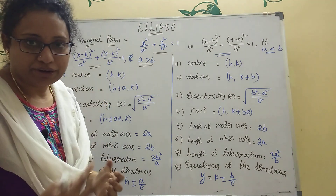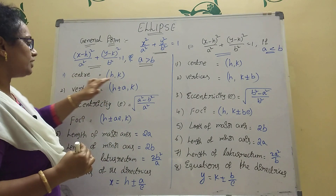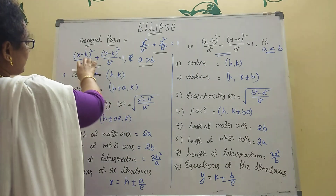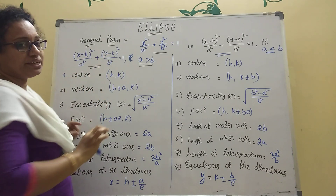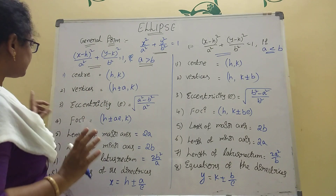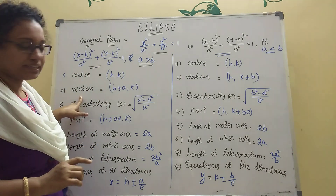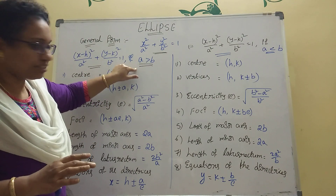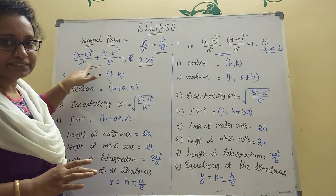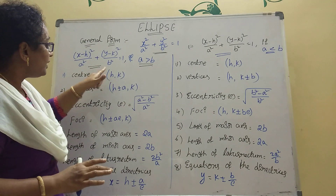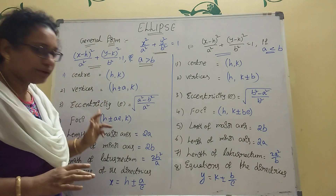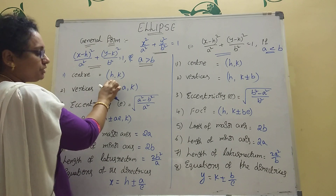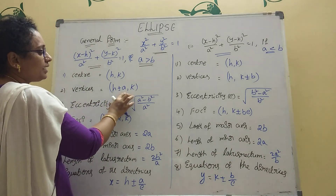First, center is (h, k). Next, vertices. If a is greater than b, then the vertices formula is (h ± a, k).